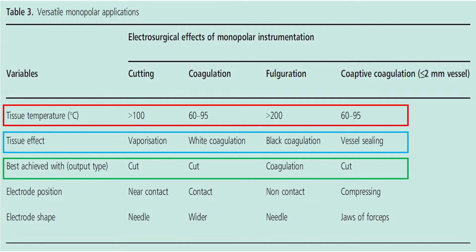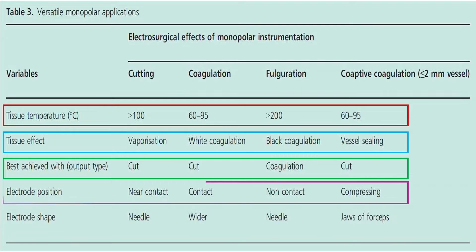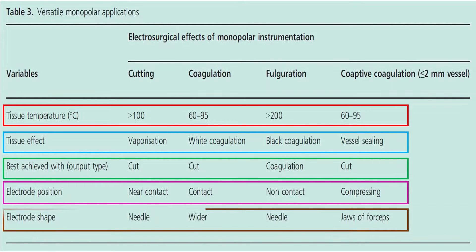Electrode position: near contact for cutting, contact for coagulation, non-contact for fulguration, and compressing for coagulation. Electrode shape: needle for cutting, wider for coagulation, needle for fulguration, and jaws or forceps for coagulation.